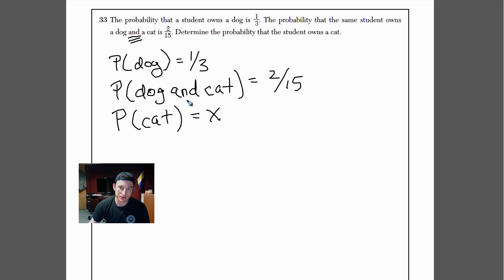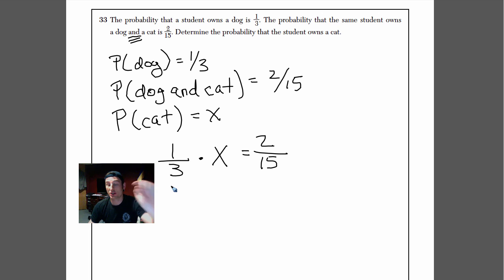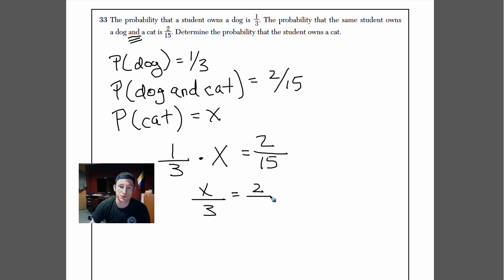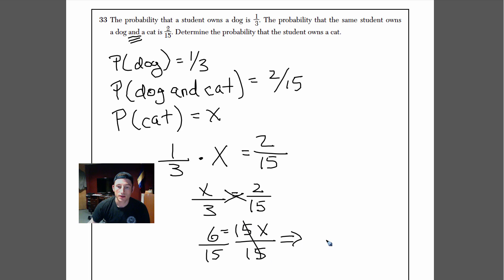So P(dog and cat) equals P(dog) times P(cat). That's 1/3 times x equals 2/15, or x over 3 equals 2/15. Cross-multiplying gives 6 equals 15x. Dividing both sides by 15 gives x equals 6/15. Simplifying by dividing top and bottom by 3, we get x equals 2/5.